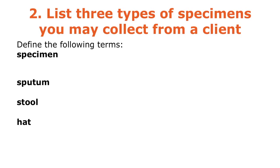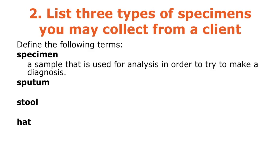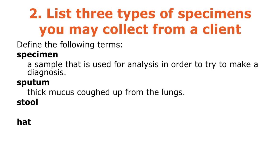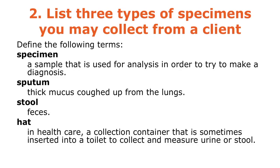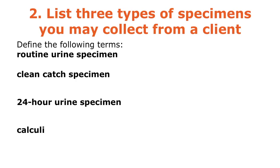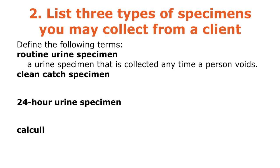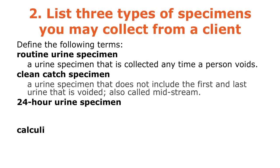A specimen is a sample used for analysis to help make a diagnosis. Sputum is thick mucus coughed up from the lungs; stool is feces. A hat in healthcare is a collection container inserted in the toilet to collect measured urine or stool before it touches the water. A routine urine specimen is collected anytime a person voids.